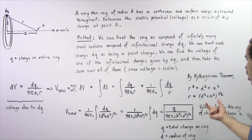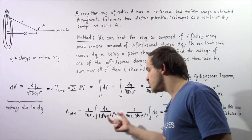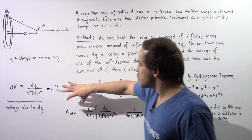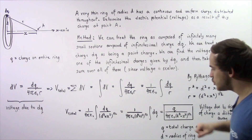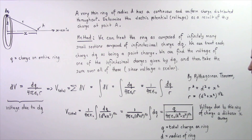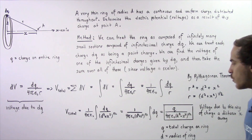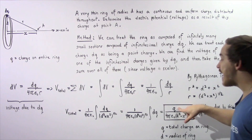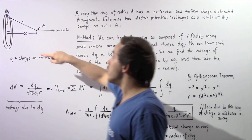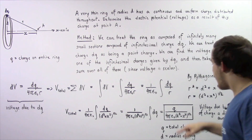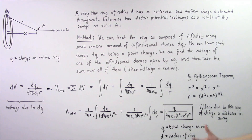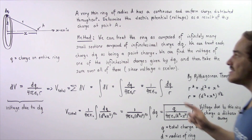We replace r with √(d² + x²). Since this is now a constant, we can bring it outside of our integral. We see that the total voltage at point A is equal to 1/(4πε₀) multiplied by 1/√(d² + x²), times the integral of dq. Integrating gives us the total charge q on the ring, so the final result is V = q / (4πε₀√(d² + x²)). This gives us the voltage due to the thin ring of charge at a distance x away.